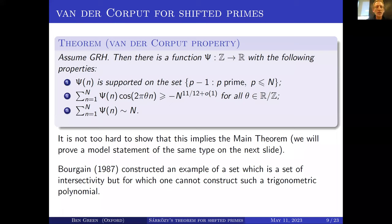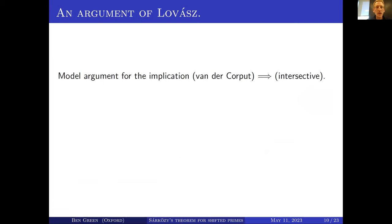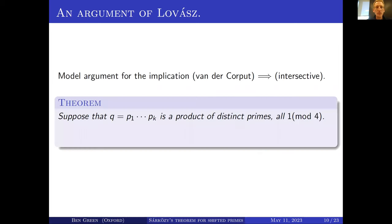I want to give a kind of model version of the implication that having positive Fourier transform implies being intersective. I'm going to show you an argument due to Lovász which proves the following theorem: suppose that Q is a product of distinct primes that are all 1 mod 4, and consider essentially the Sárközy problem for squares mod Q.